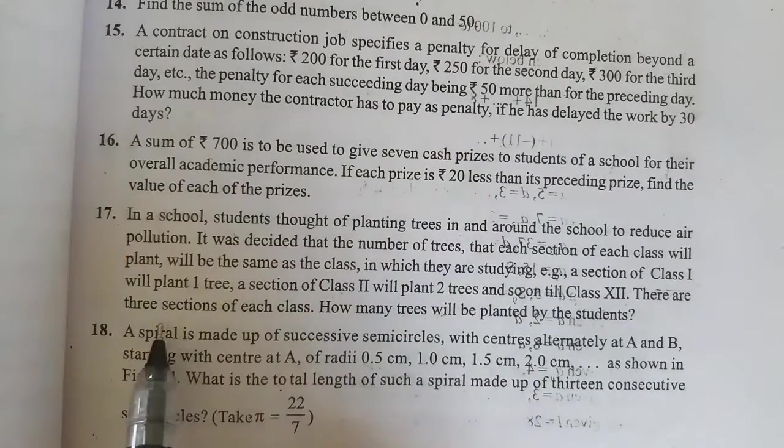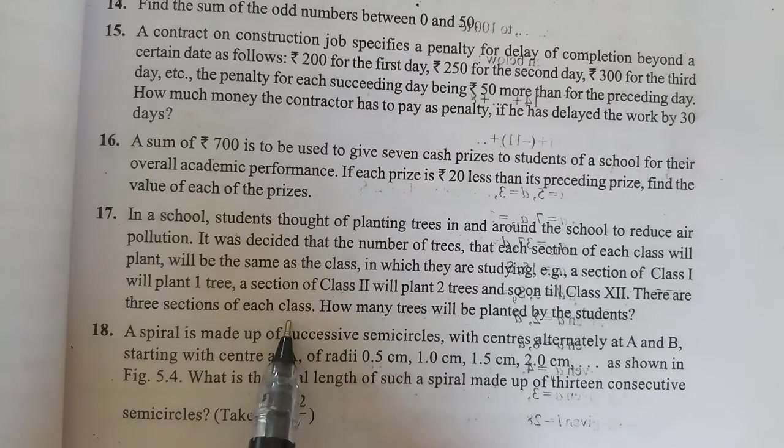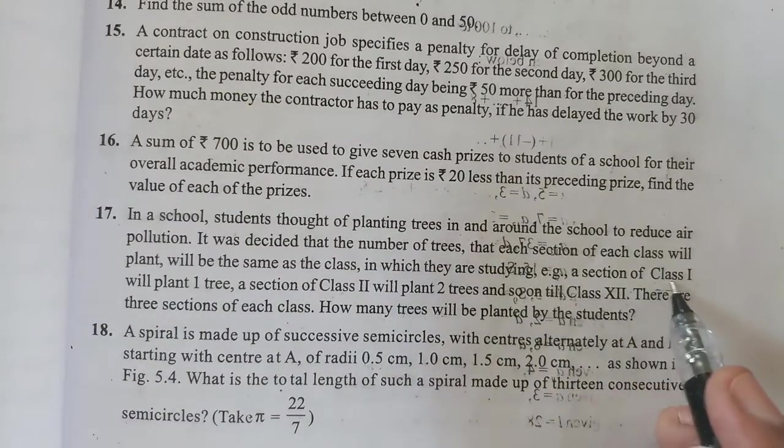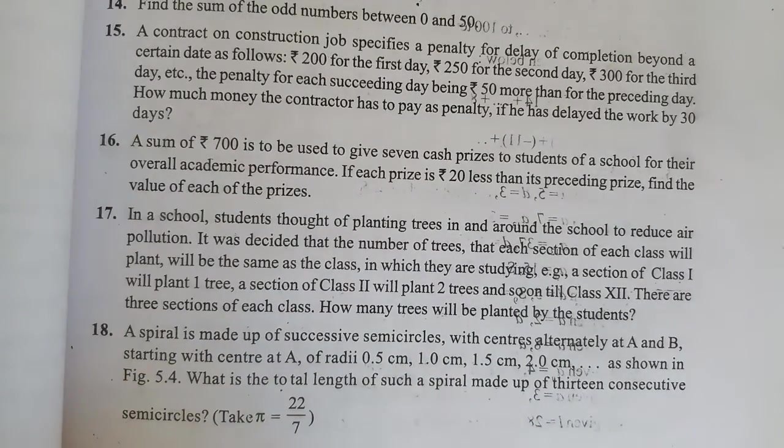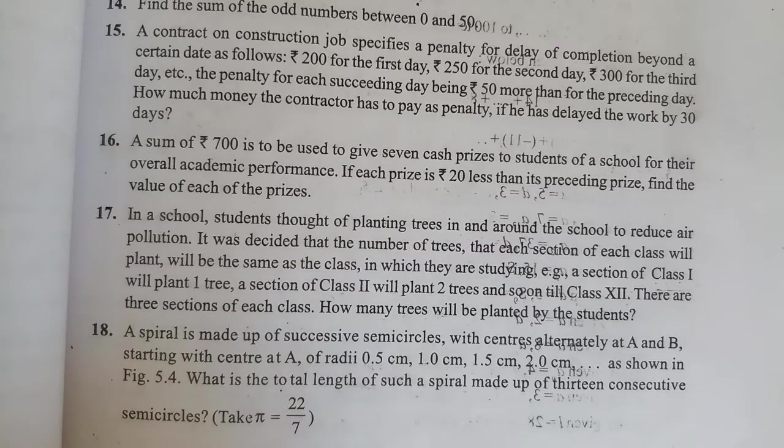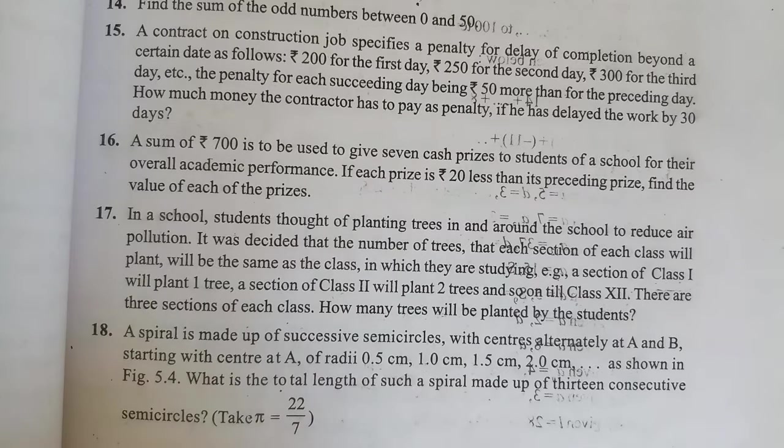And in every standard, there are 3 sections. This means that in the first standard, there are 3 sections, each planting 1 tree. That means in the first standard, there are 3 trees planted. In the second standard, in every section, 2 trees are planted, so there are 6 trees. Third standard, there are 9 trees, and so on.